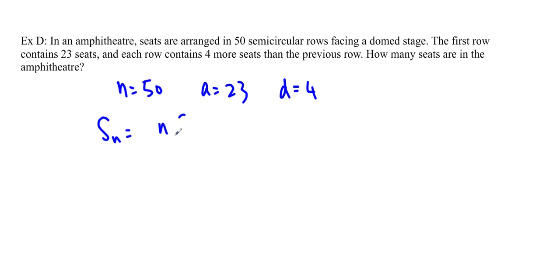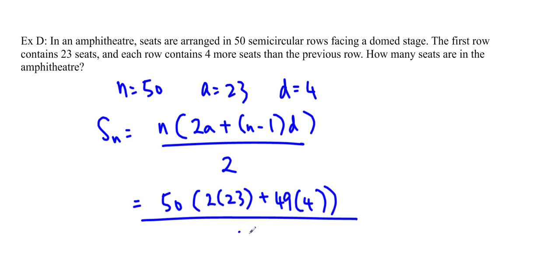So I can just plug it into my formula. S sub n is equal to n times (2a plus (n-1) times d) over 2. And you just plug it in. And so it's 50 times (2 times 23 plus 49 times d, which is 4) over 2. Plug it into your calculator, and you get 6050. So we'll write the answer because it's a word problem. The number of seats is 6050, or you can write there are 6050 seats.